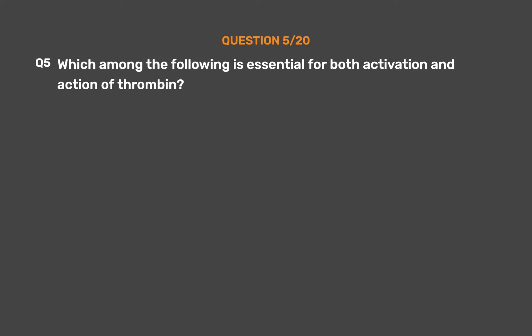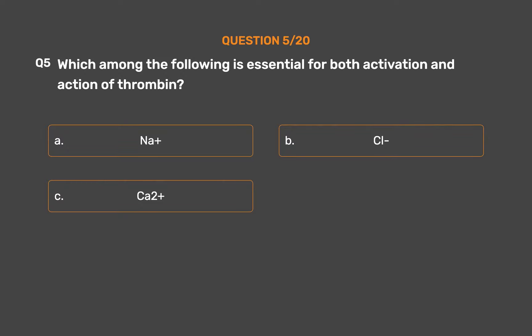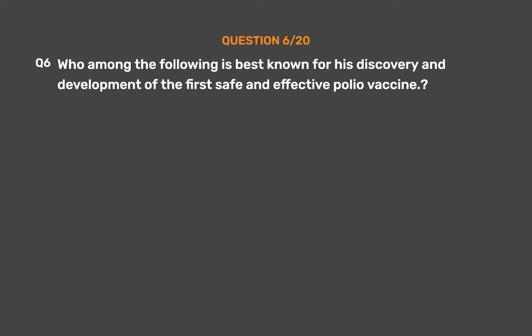Question number five. Which among the following is essential for both activation and action of thrombin? Option A: Na+. Option B: Cl−. Option C: Ca2+. Option D: Mg2+. The correct answer is Option C: Ca2+.